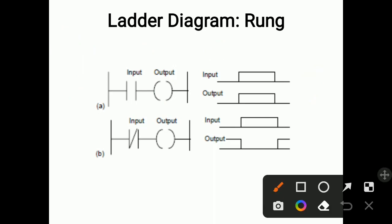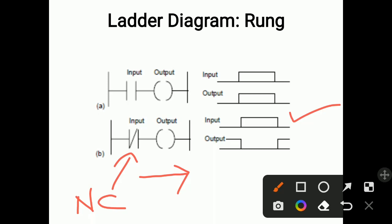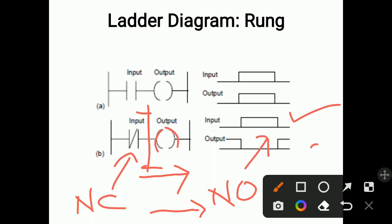In the second case, the contact used is normally closed. The output is continuously produced because the switch is already closed — power can flow from left to right, so the output is on. Now suppose we give some input supply to this normally closed contact. It will get normally open, the power supply will get cut, and the output will turn off.